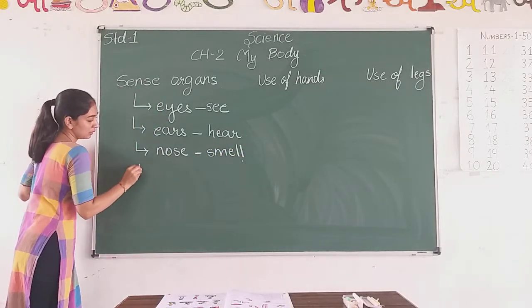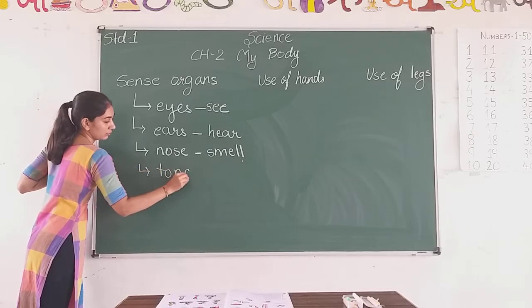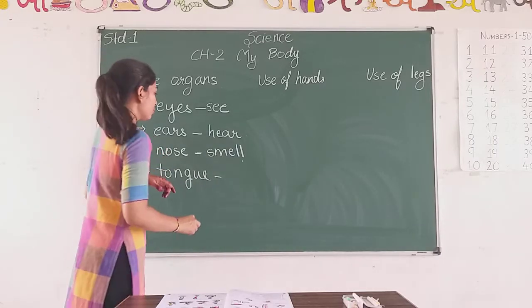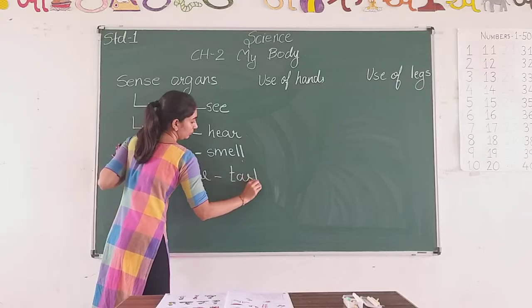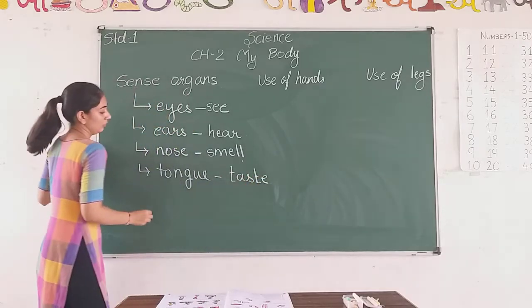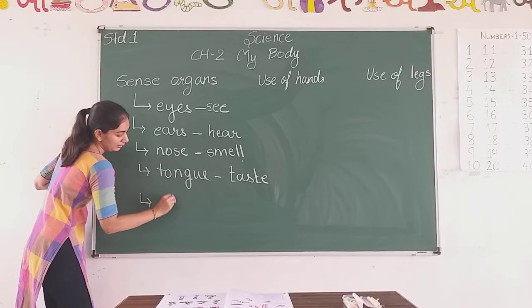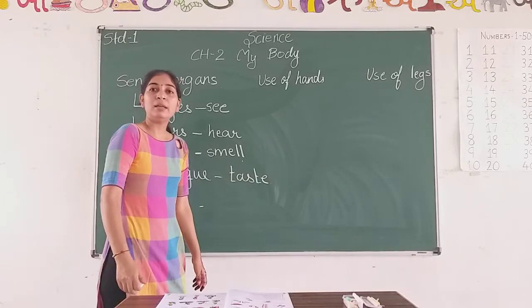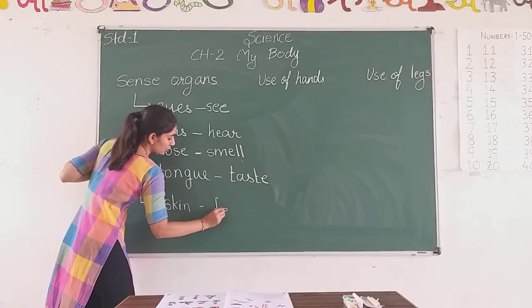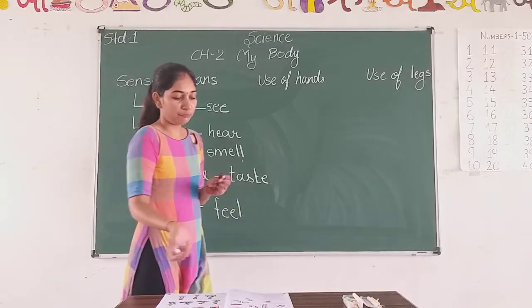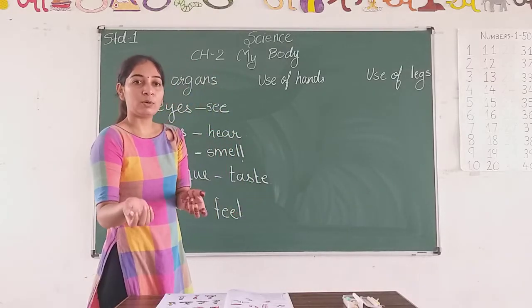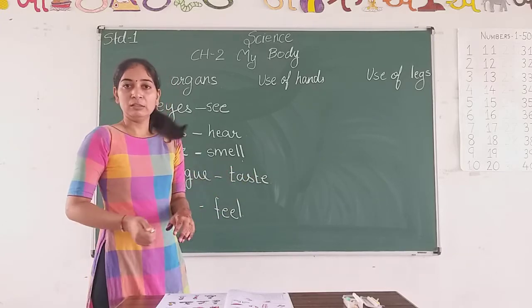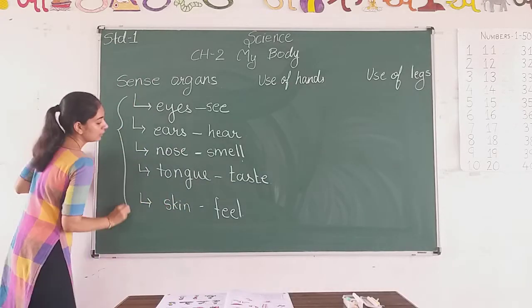The next one is tongue. Tongue helps us to taste. And the last is skin. Skin helps us to feel or touch. These are the 5 sense organs.